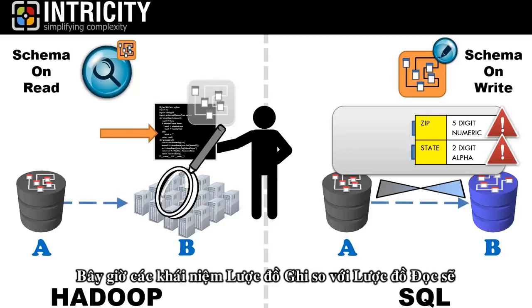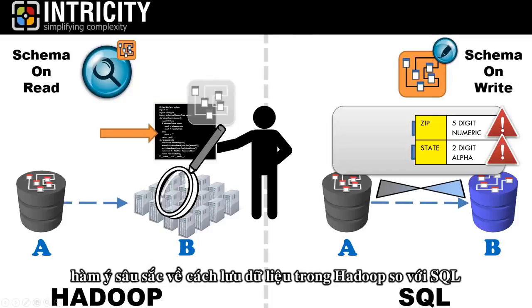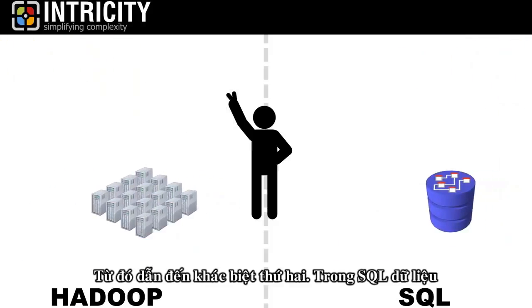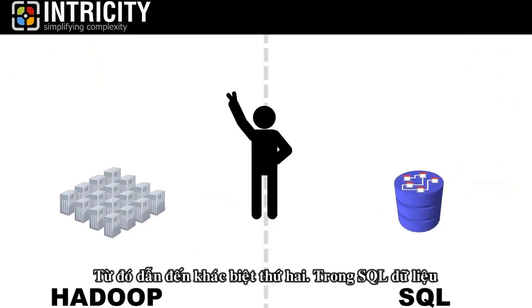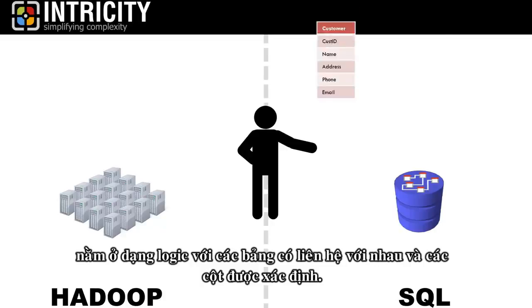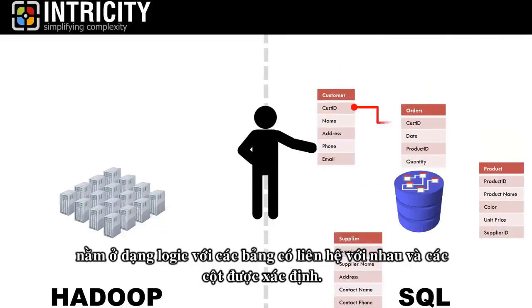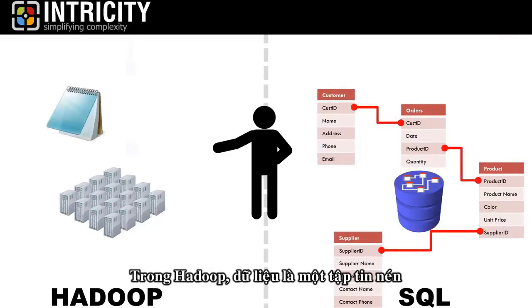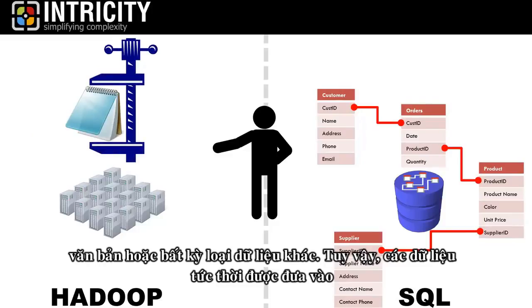The concept of schema on write versus schema on read has profound implications on how the data is stored in Hadoop versus SQL, which leads us to our second difference. In SQL, the data is stored in a logical form with interrelated tables and defined columns. In Hadoop, the data is a compressed file of either text or other data types.